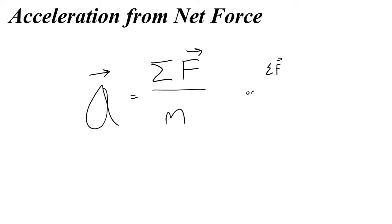Of course we can rewrite this different ways: F equals m times a, and m equals net force over acceleration. But it's important to know you can only relate acceleration to force if it is the net force. Before we were only dealing with one force; now we're dealing with multiple forces, and it's important to take their net if we want to find the acceleration. The units are the same — newtons of force, acceleration in meters per second squared.